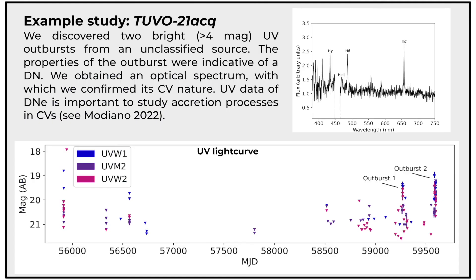I'll just leave you with an example study. Last February, we discovered some bright UV outbursts from an unclassified source. We thought it was a dwarf nova, an outburst from an accreting white dwarf. We obtained an optical spectrum to confirm this classification with SALT. And we talk about how important the UV observations are for the accretion processes in cataclysmic variables. Thank you.